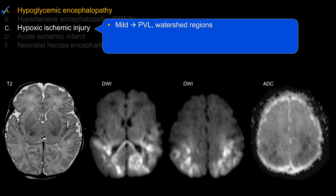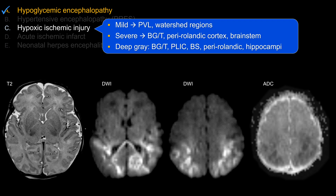Hypoxic ischemic injury. There are different forms depending on when it occurs and how severe the injury is. In premies, you tend to have effects in the periventricular white matter, presenting later with periventricular leukomalacia. In term babies, it tends to occur in the white matter or the watershed region. In more severe cases, you have involvement of the central gray — basal ganglia, thalami, perirolantic cortex affecting the primary sensory-motor region, and brainstem — regions that are metabolically active. Deep gray structures like basal ganglia, thalami, posterior limb of the internal capsule, brainstem, perirolantic region, and hippocampi are independent predictive factors for more adverse outcome or motor dysfunction.